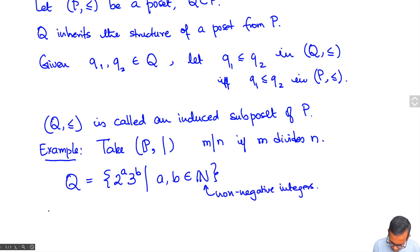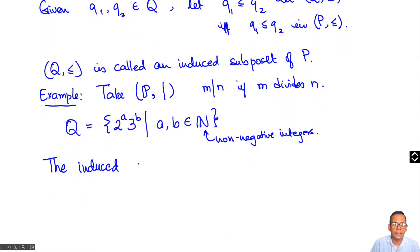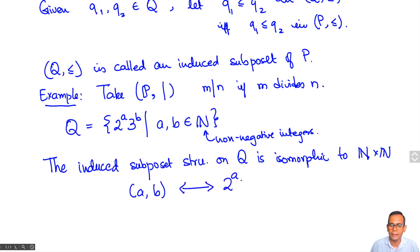So then it turns out that the induced subposet structure on Q is actually a familiar one. It is isomorphic to non-negative integers cross non-negative integers. So how does this isomorphism work? An element of N cross N, A comma B, will correspond to the element of Q of the form 2 to the power A, 3 to the power B.